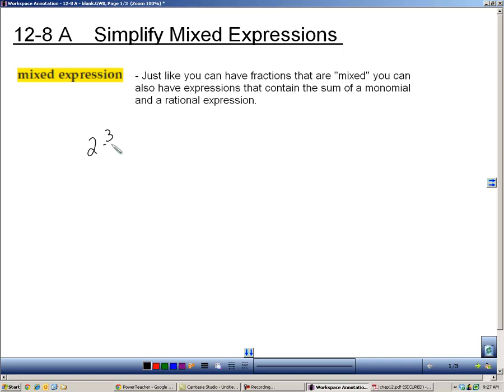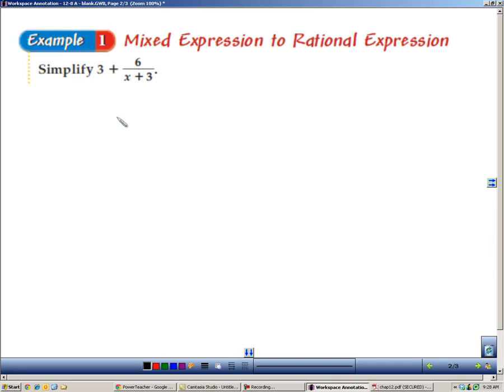For example, 2 and 3 fifths is a mixed fraction, and that means 2 plus the fraction 3 fifths. So just like you can have that, we can also have something like this, a mixed expression that has a number plus a fraction that's made up of a rational expression because it has variables in addition to subtraction signs.